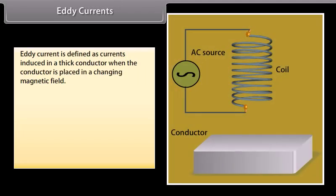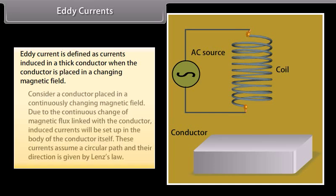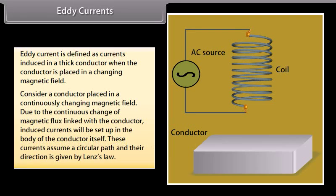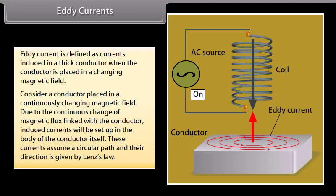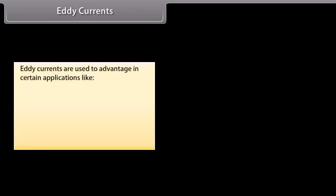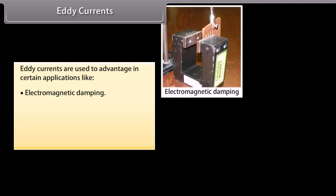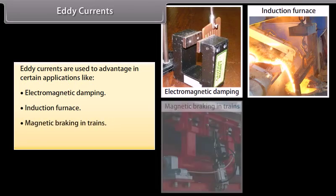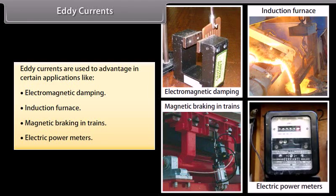Eddy currents are defined as currents induced in a thick conductor when the conductor is placed in a changing magnetic field. Due to the continuous change of magnetic flux linked with the conductor, induced currents are set up in the body of the conductor itself. These currents assume a circular path and their direction is given by Lenz's law. Eddy currents are used to advantage in applications like electromagnetic damping, induction furnace, magnetic braking in trains, and electric power meters.